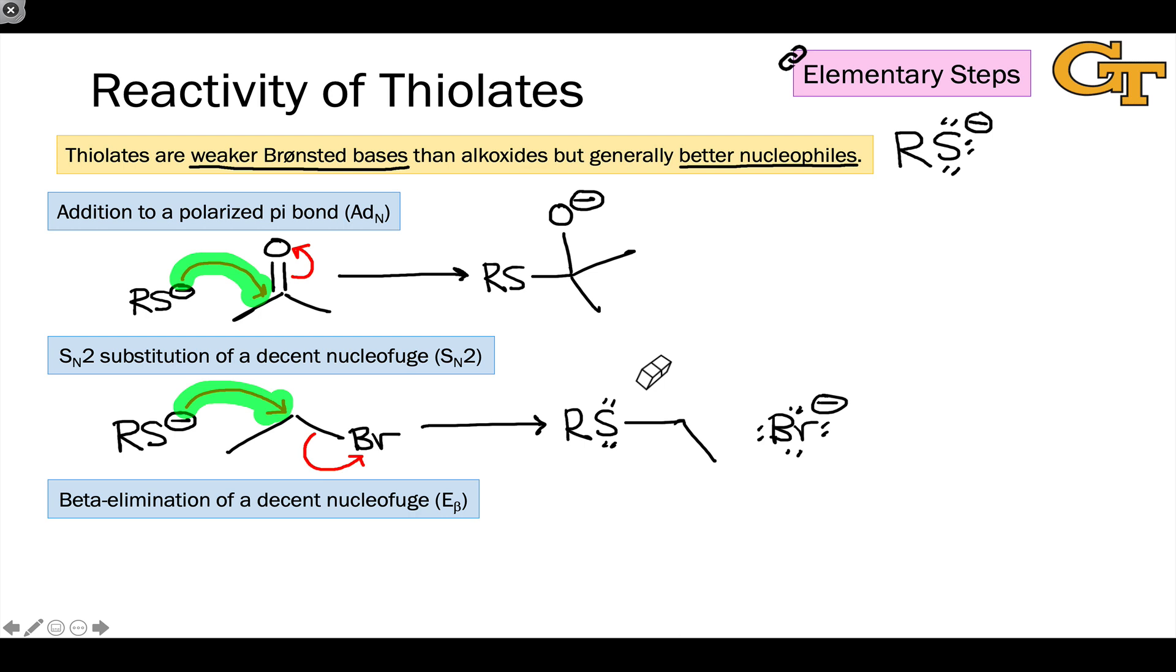This is an intermolecular N to sigma-star interaction, but intramolecular or internal N to sigma-star overlap can result in beta elimination.